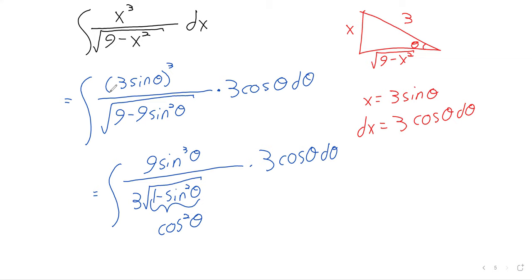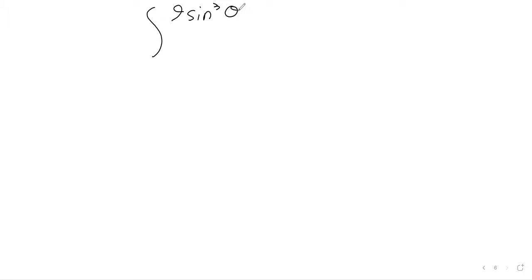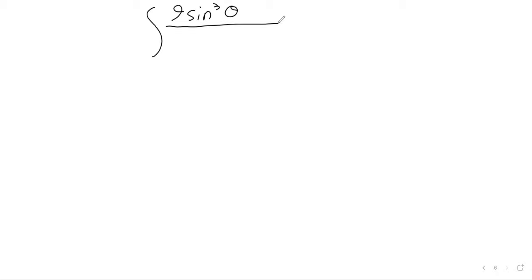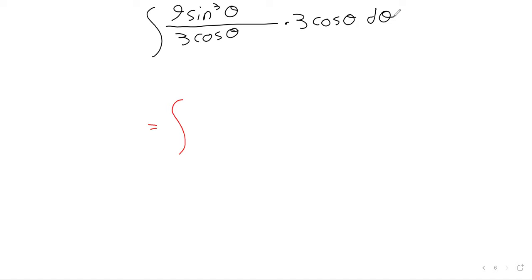The Pythagorean identity once again tells us that we've got the cosine squared of theta under the square root. So 9 times the sine cubed of theta over the square root of the cosine squared — which becomes the cosine — times 3 cosine theta dθ. Unlike the first problem which was lab-grown to work out nicely, we still get some cancellation.